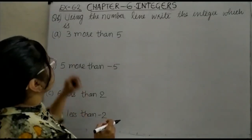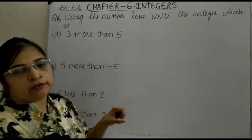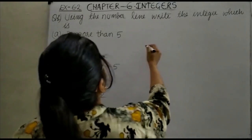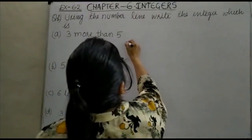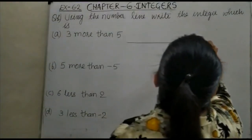Our first question is: 3 more than 5 on the number line. So first of all, we will plot the number line. This is our number line.